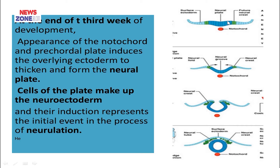Timing: at the end of the third week of development, when the notochord and prechordal plate appear, they initiate the overlying ectoderm to become thickened and form the neural plate. This is the neural plate; this is the notochord. The neural plate cells come from the neuroectoderm, and the induction represents the initial events in the process of neurulation. The neural tube is formed by the process known as neurulation.